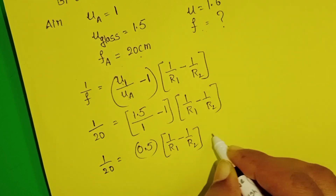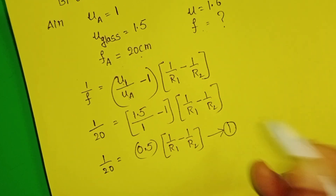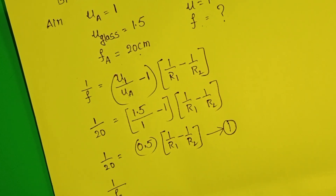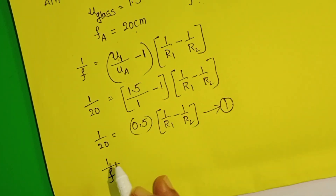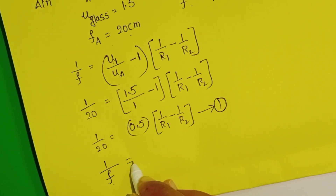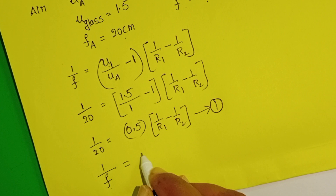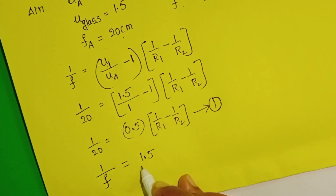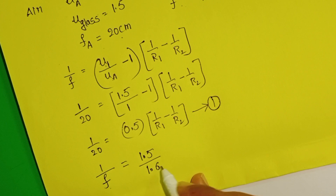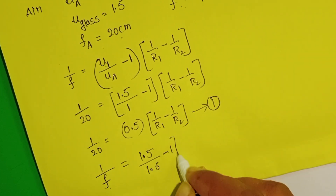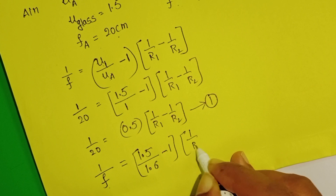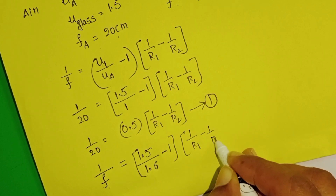Now, the focal length of the lens when it is placed in the liquid medium: 1/F = (1.5/1.6 − 1) × (1/R1 − 1/R2). Take this as equation 2.